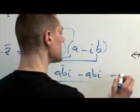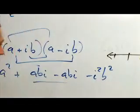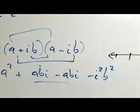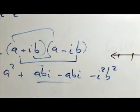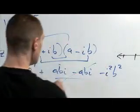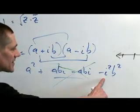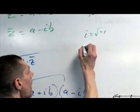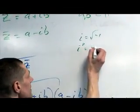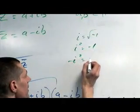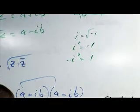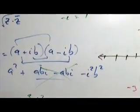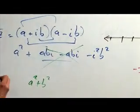These cancel out. Minus i^2—well, i is the square root of negative one. i^2 then is negative one. Minus i^2 is positive one, so this is a^2 + b^2. Remember, we have to take the square root.